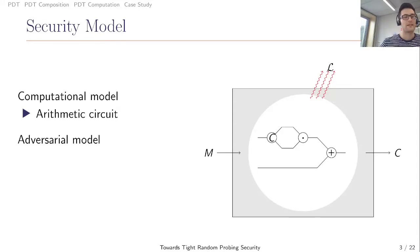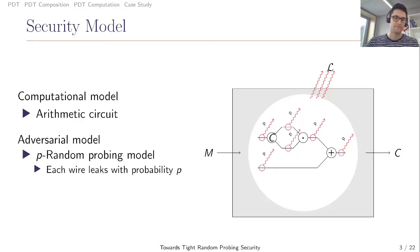With the arithmetic circuit, we can define our adversarial model. We use the P1 and probing model, originally introduced by Ishai, Zahai and Wagner at Crypto 2003. They assume that each wire leaks with probability P. The advantage of this model is that it is close to the real world, since it describes the continuous nature of leakage. If a value is used multiple times, it is also carried by multiple wires and the leakage increases.